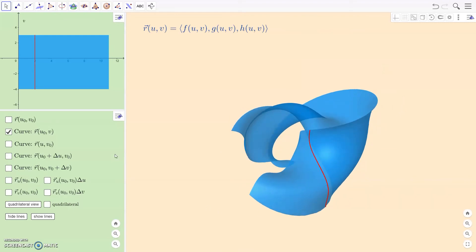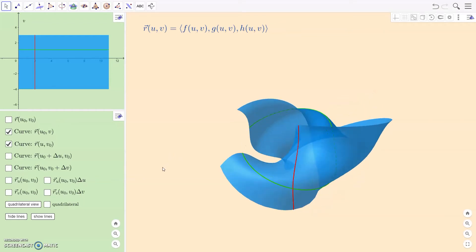So I have this red curve here, which is the result of fixing a U but letting V change. I also can have a curve where I fix a V at V0, we'll call it, which seems to be the number 1 here, but I let the U change. So the green curve is where U is changing. The red curve is where V is changing.